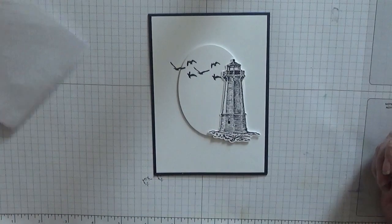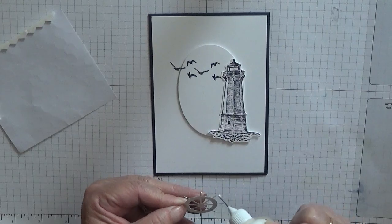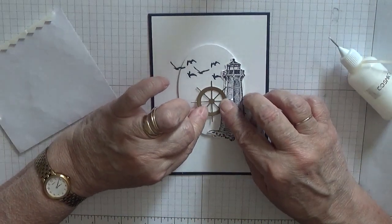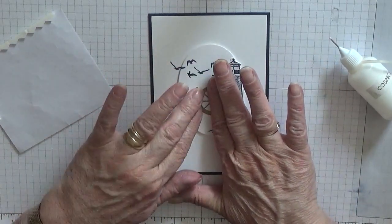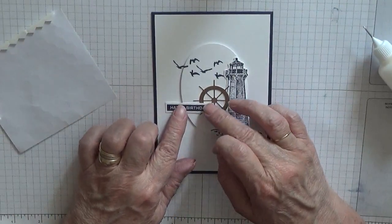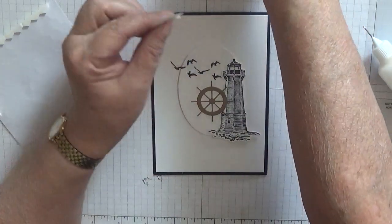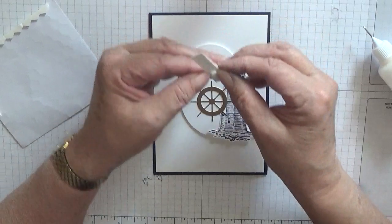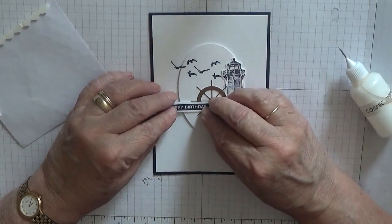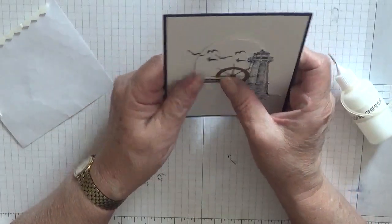With this ship's wheel, just place some glue on it and just pop that down there. With the Happy Birthday, I'm going to pop it on top of the wheel, but I'm going to get two tiny mini dimensionals and put them at one end. Take off the paper, put some glue on the rest, and stick that down like that.